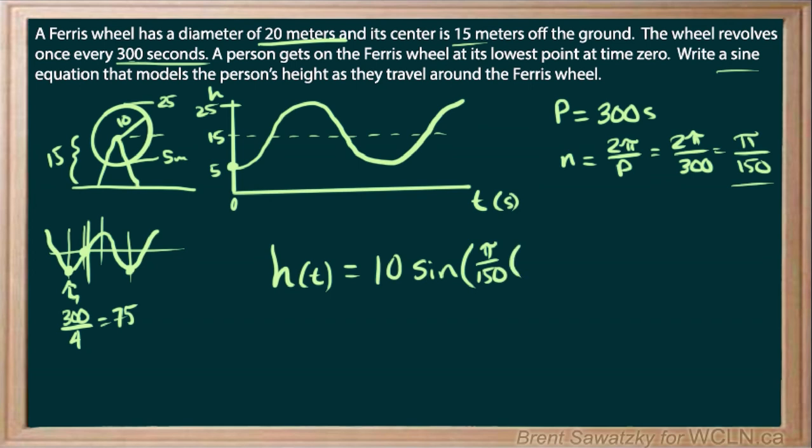And then we can put another set of brackets and we can say we have our time there, our variable, and we are shifting to the right by 75, so that means we stick that in there, 75, and good there. Now as far as vertical shifts, well we certainly shifted from 0 up to 15, so we would add a 15 at the end, and there we go, there's our equation.